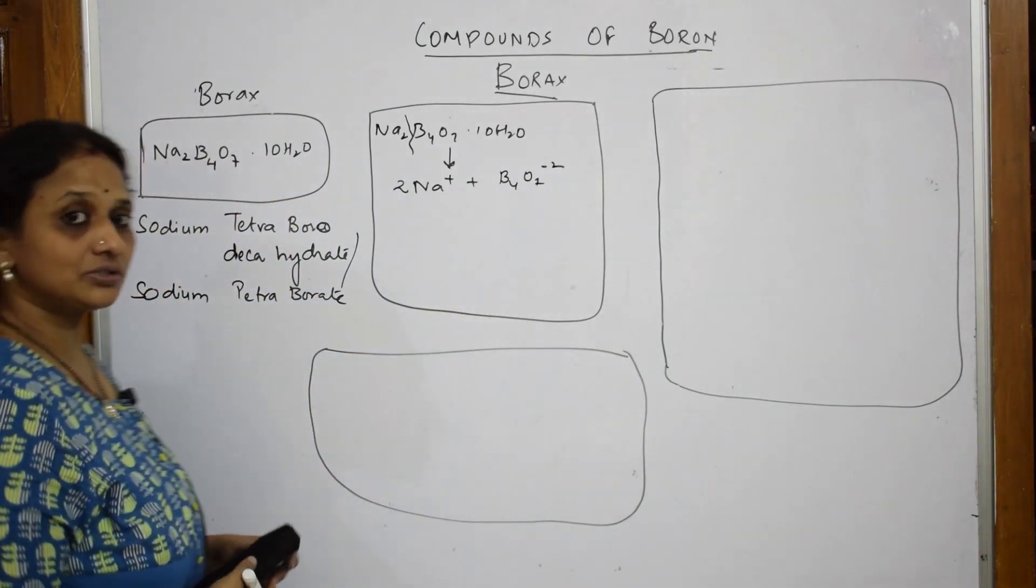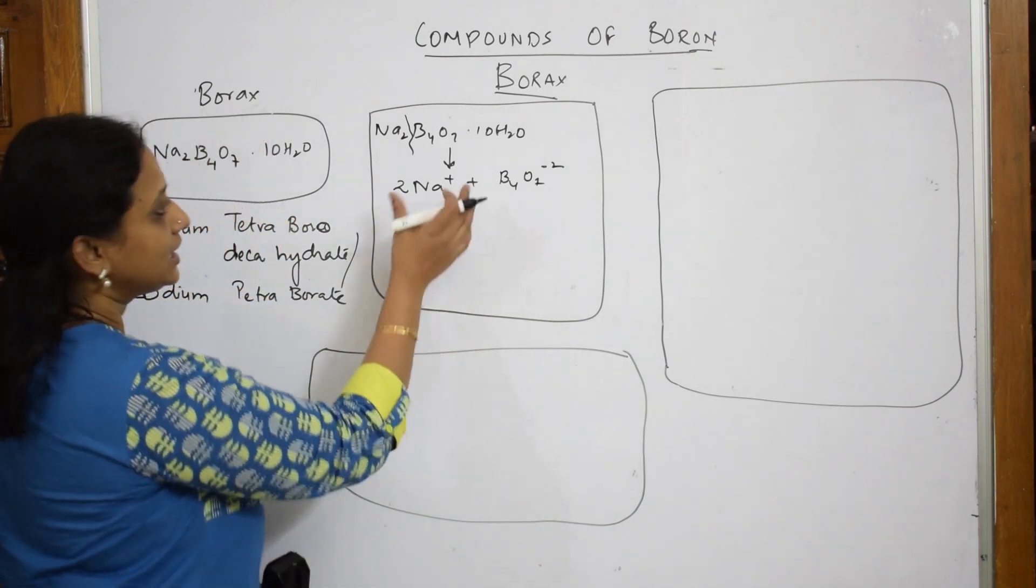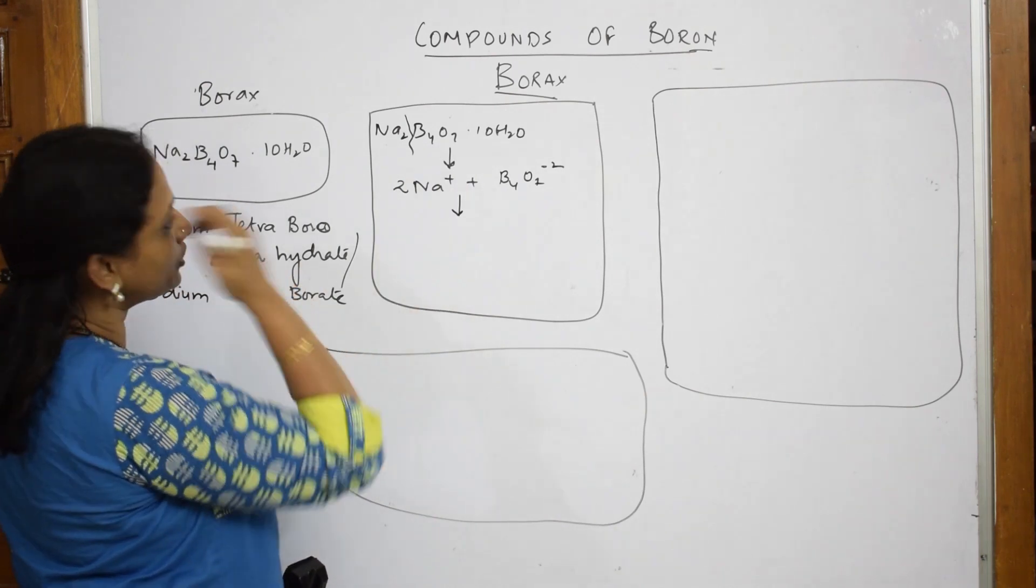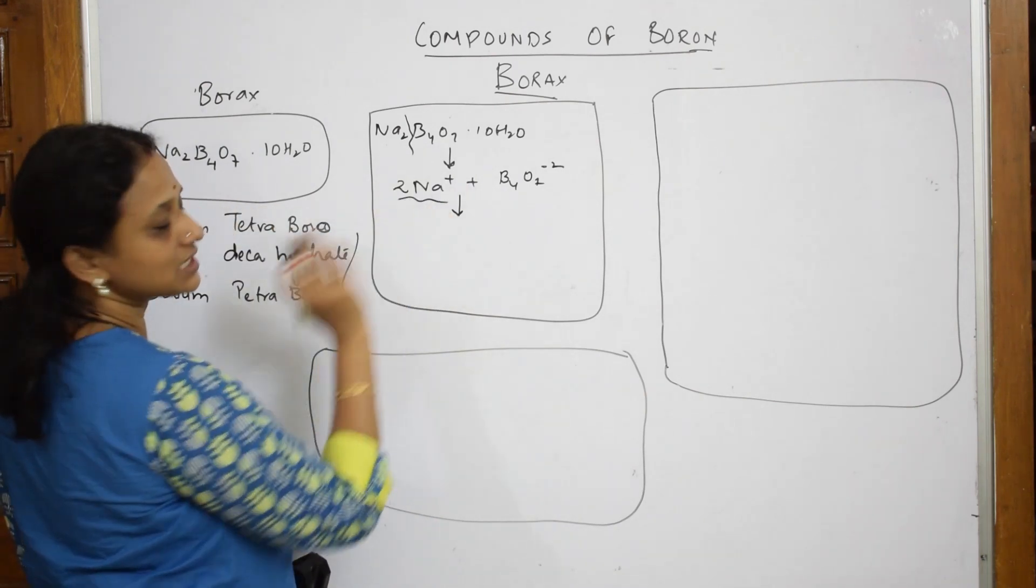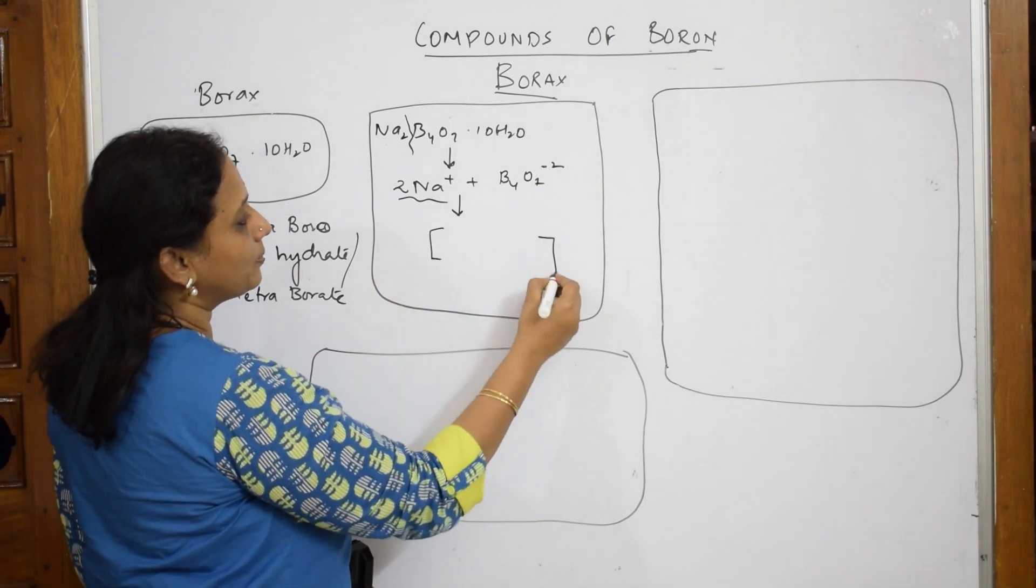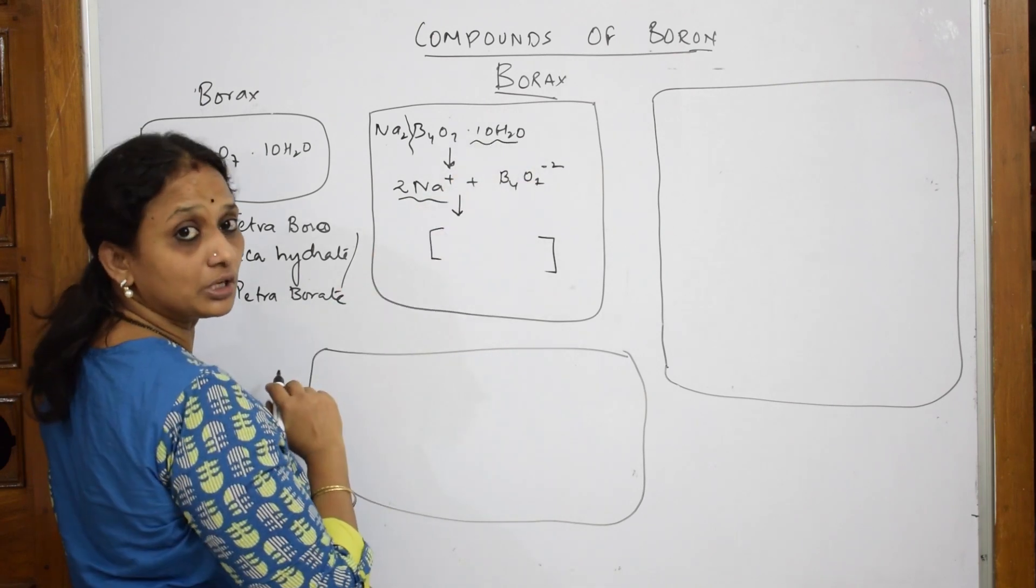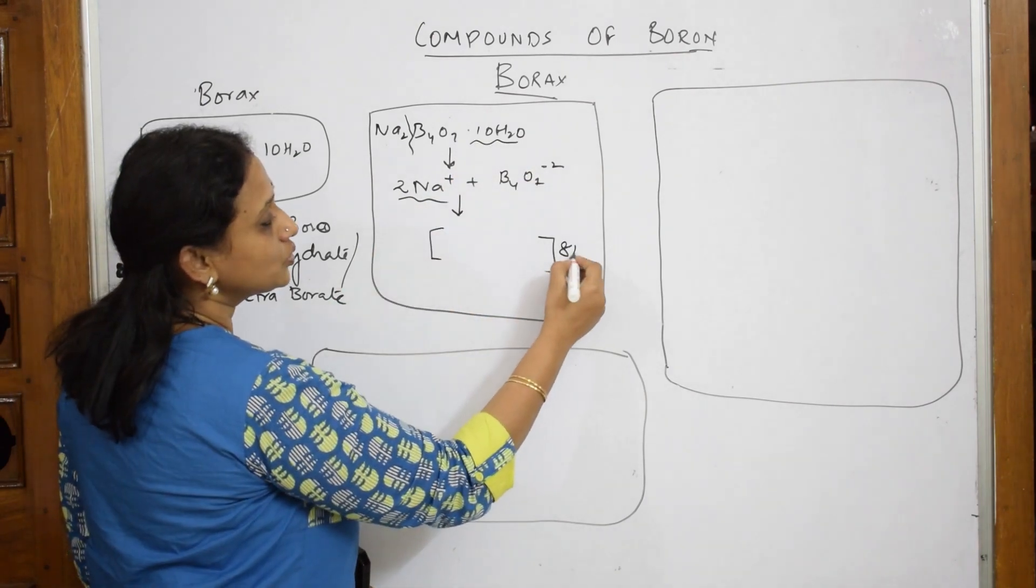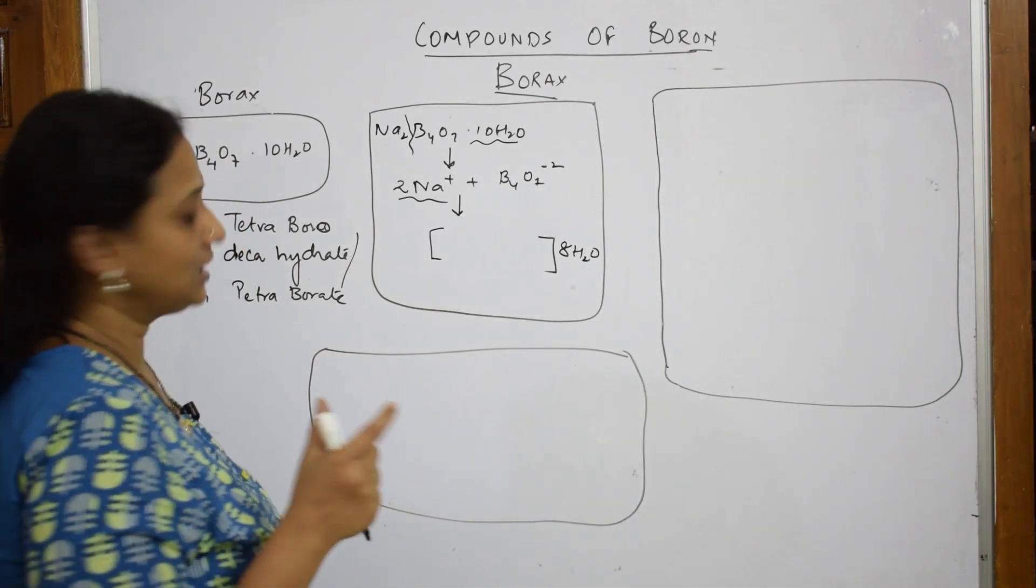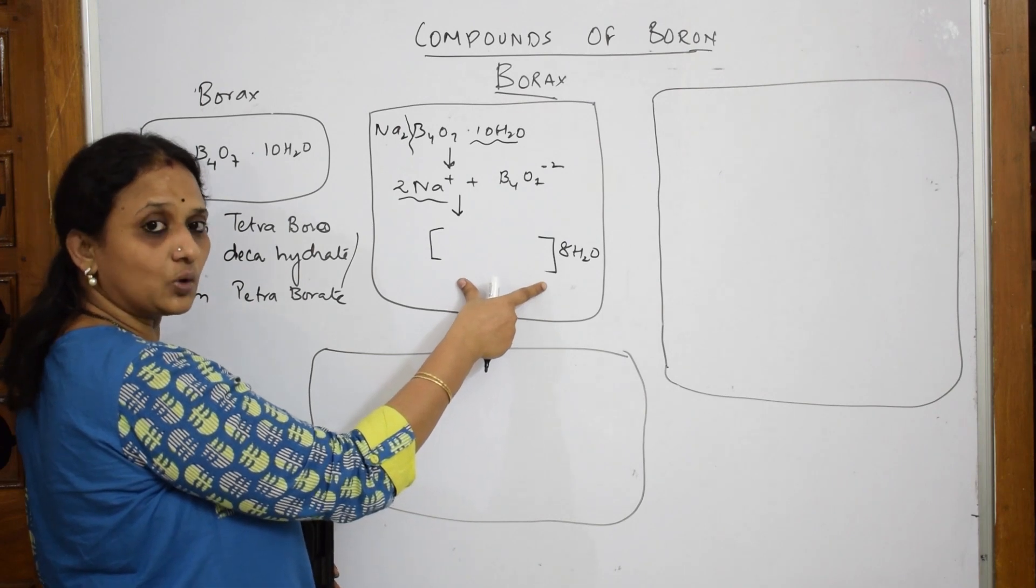Now, basically the structure of this particular borax or borate, it exists in this form. Just observe carefully. The whole thing, whatever is there, I am going to write it in this form. So Na+ is broken. Just leave that. It's going to form a complex. Now observe carefully. You are out of your 10 H2O molecules, your 8 H2O has just come out of the crystal. This is your coordination sphere and ionization sphere. We should be studying. We are forming a coordinate covalent compound.